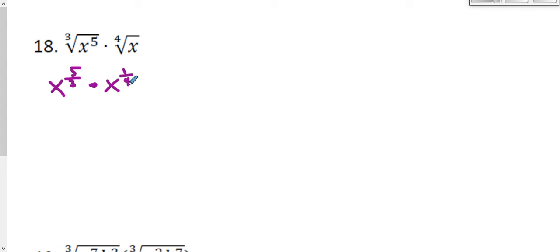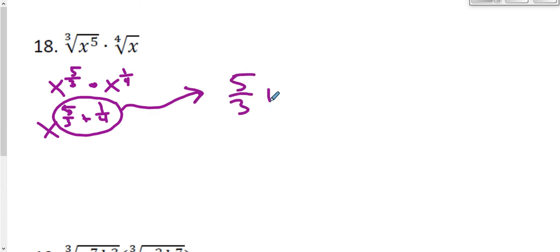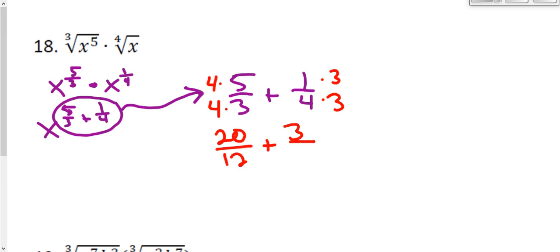Now that I have these rewritten in exponential form, we can multiply them together. To multiply, I add my exponents: five-thirds plus one-fourth. To add those, I need a common denominator. Three and four have nothing in common, so the common denominator is twelve. I multiply five-thirds by four over four, and one-fourth by three over three, giving me twenty over twelve plus three over twelve, which equals an exponent of twenty-three over twelve. So the result is x to the twenty-three over twelve power.